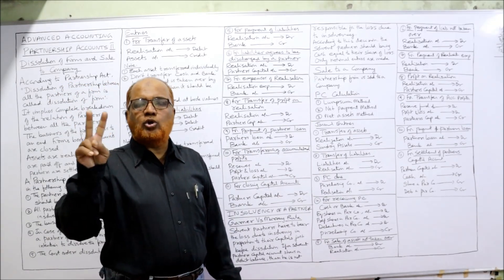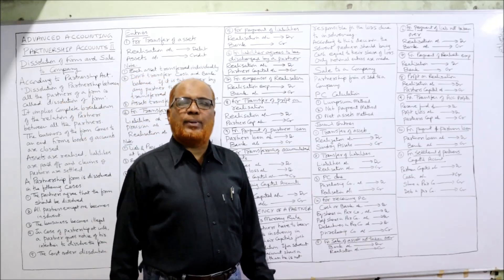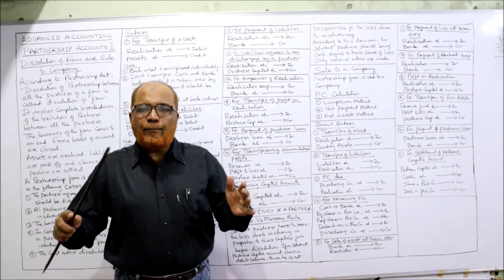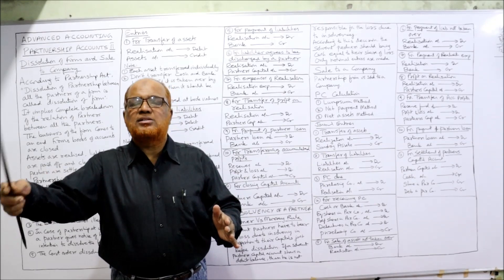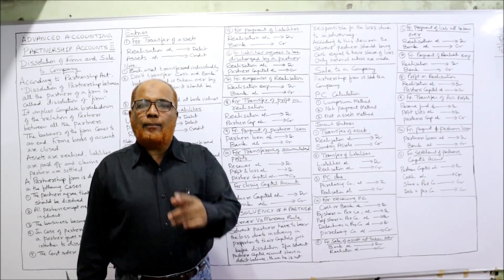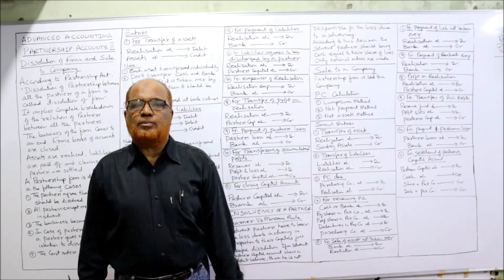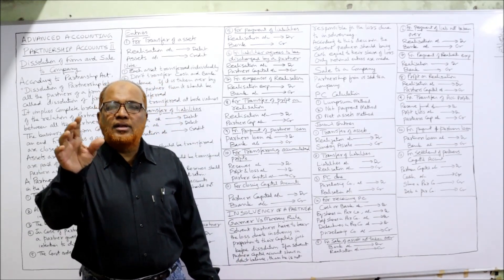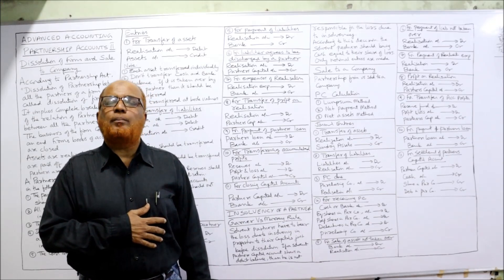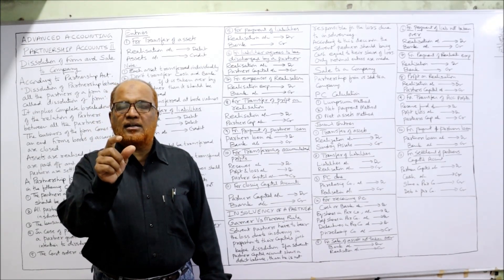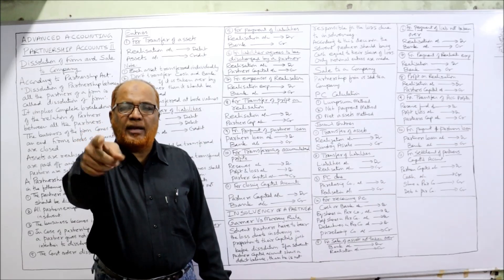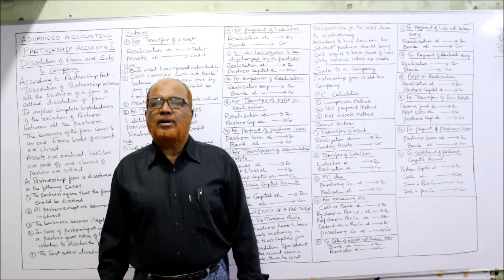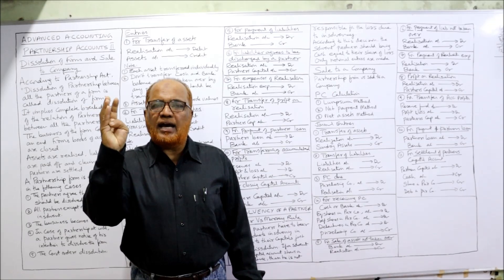This chapter covers two topics: dissolution of firm and sale to a company. Having discussed dissolution, we now move to sale to a company. Sometimes a partnership firm sells its business to a joint stock company. The amount receivable from the company is called purchase consideration — it is the amount payable by the company to the partnership firm for taking over the business. Three methods are used to calculate the purchase consideration: lump sum method, net payment method, and net assets method.